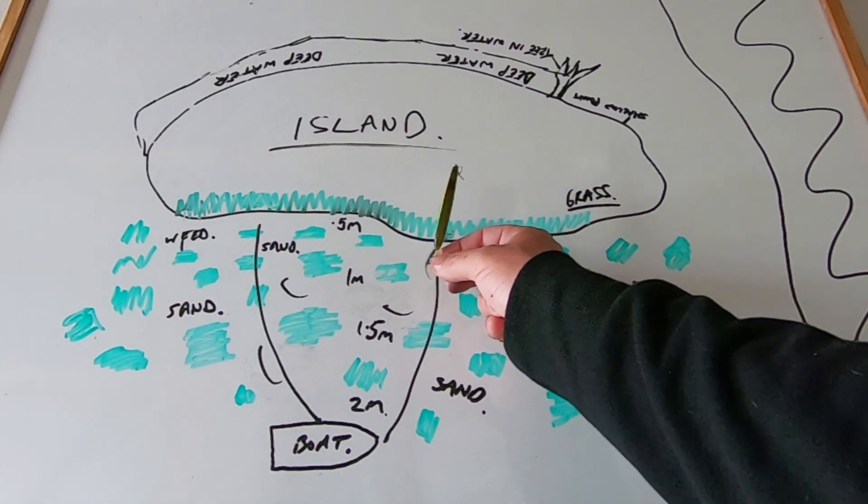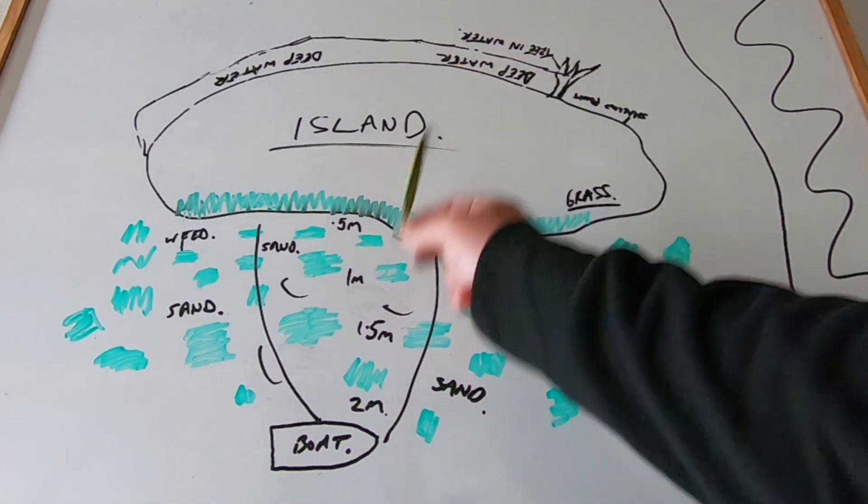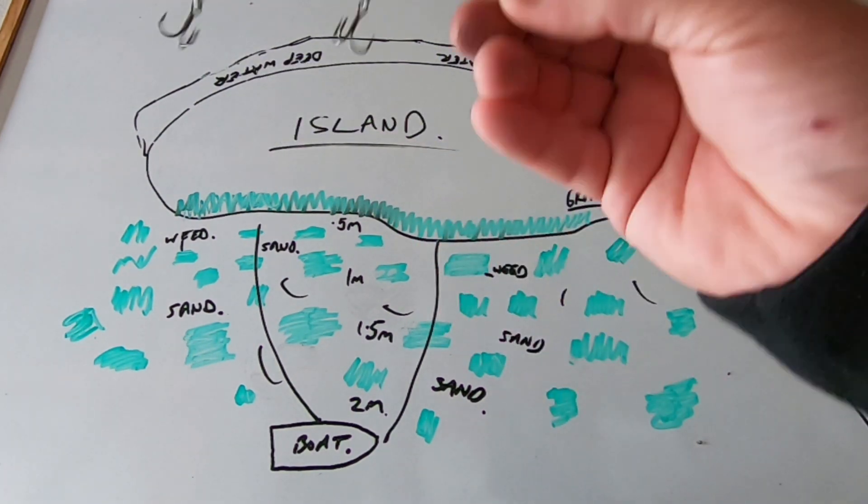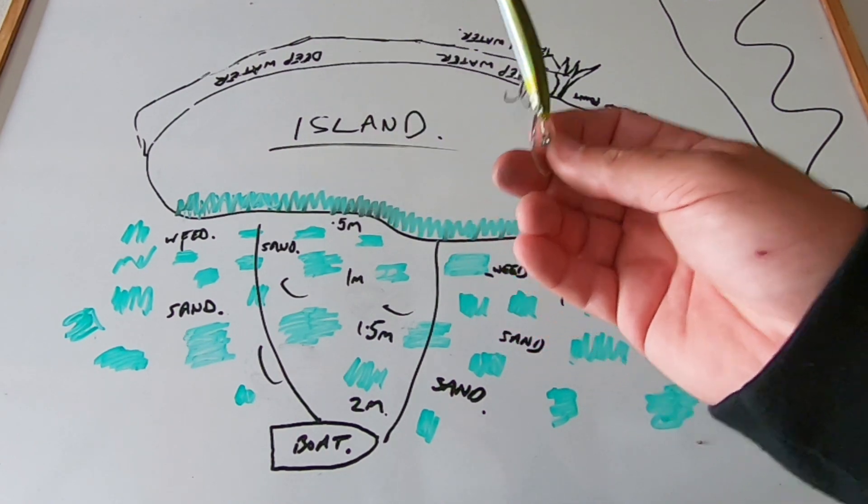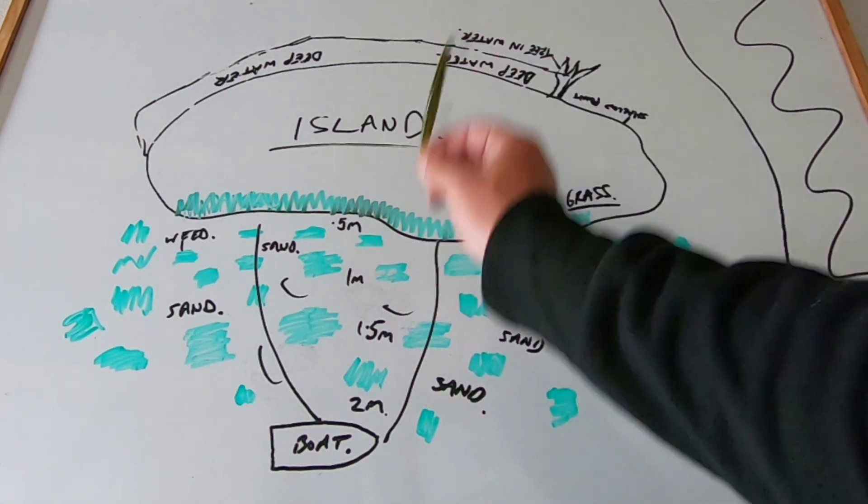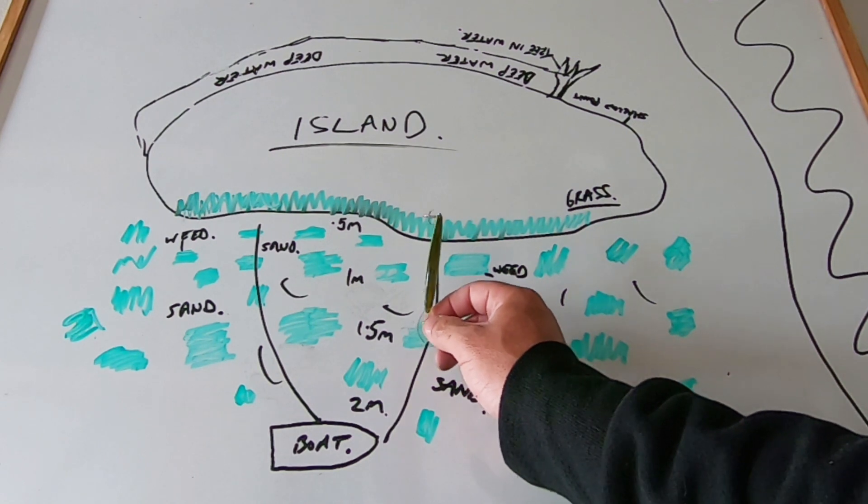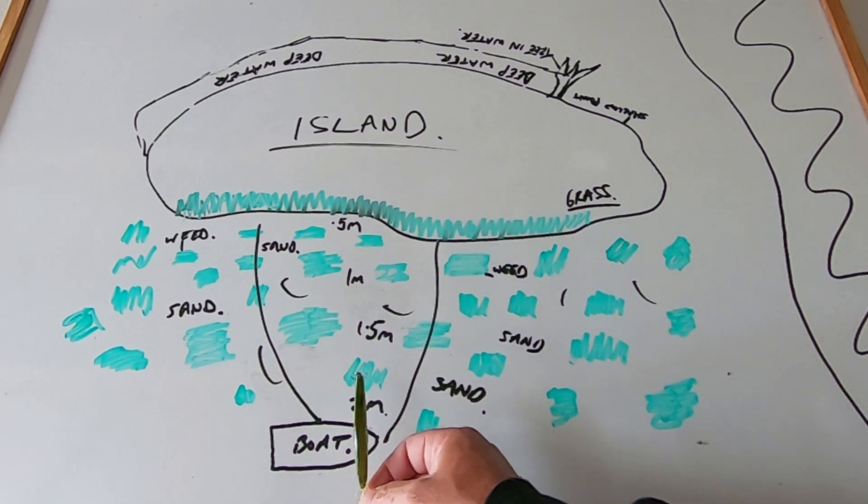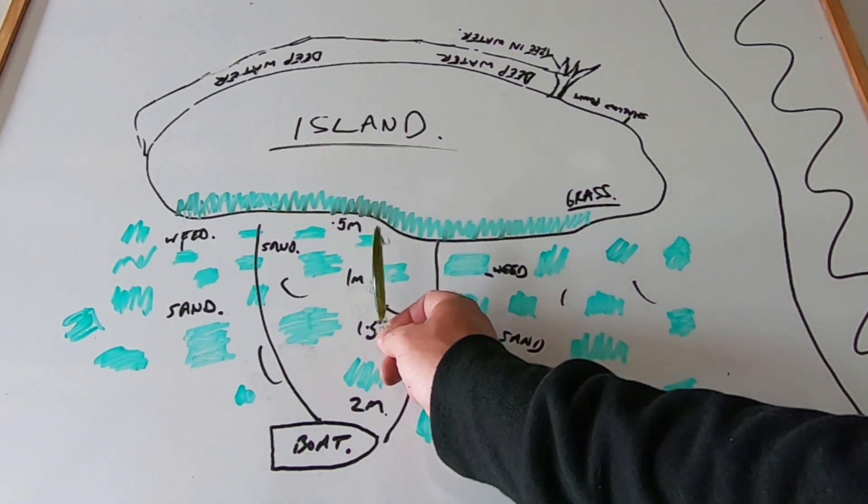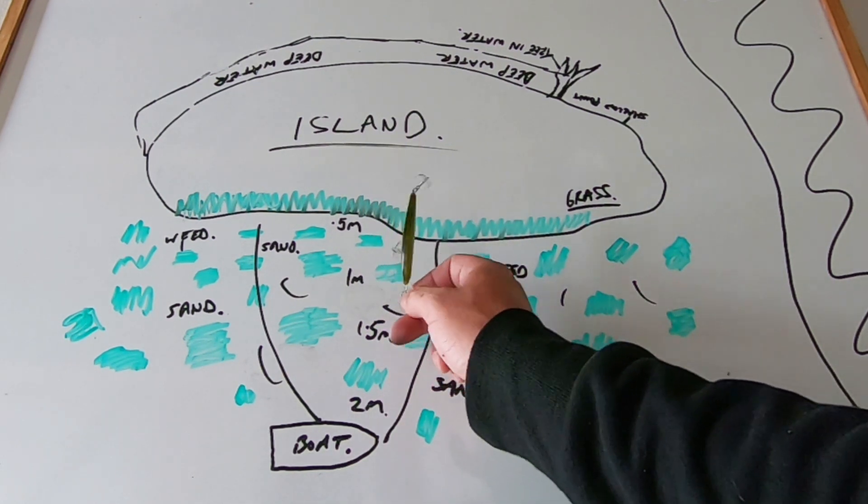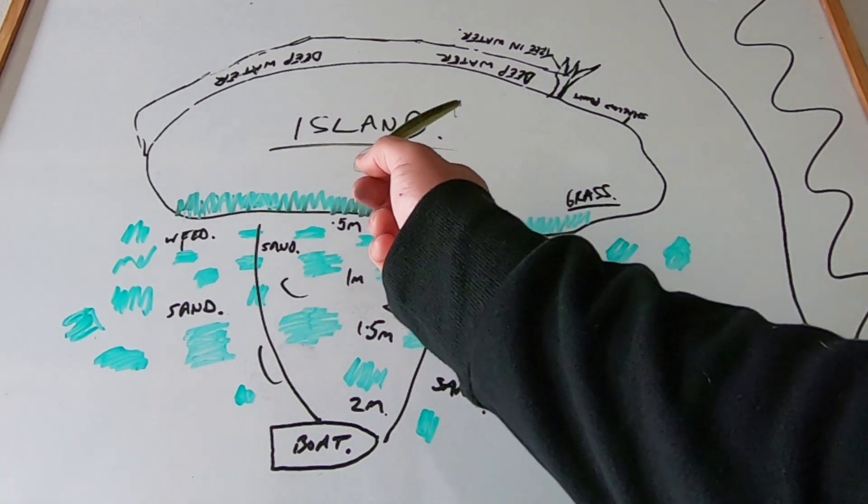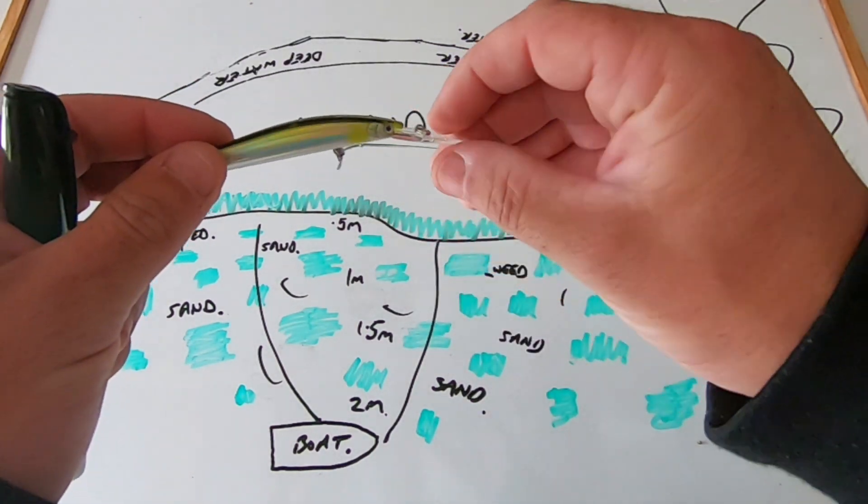I was casting these trying to get them as tight to the edge of the island as I possibly could, taking up the slack, and then just rip and let it sit there. The beautiful thing with these lures is they suspend - they don't rise up and they don't sink to the bottom. I'd cast it straight to the island, rip it down, and just let it sit there five, six, seven, eight seconds, then go for another couple of jerks and wind.